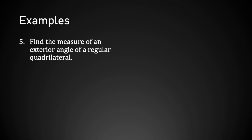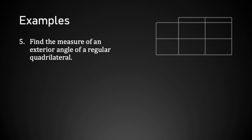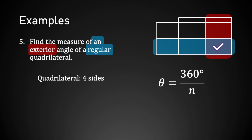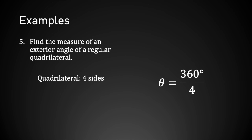Now let's shift to exterior angles. Example 5: find the measure of an exterior angle of a regular quadrilateral. The word 'an' tells us we're looking for just one angle, so we use the formula θ = 360 degrees / n. A quadrilateral has 4 sides, so n = 4. 360 degrees divided by 4 equals 90 degrees, and that's my final answer.